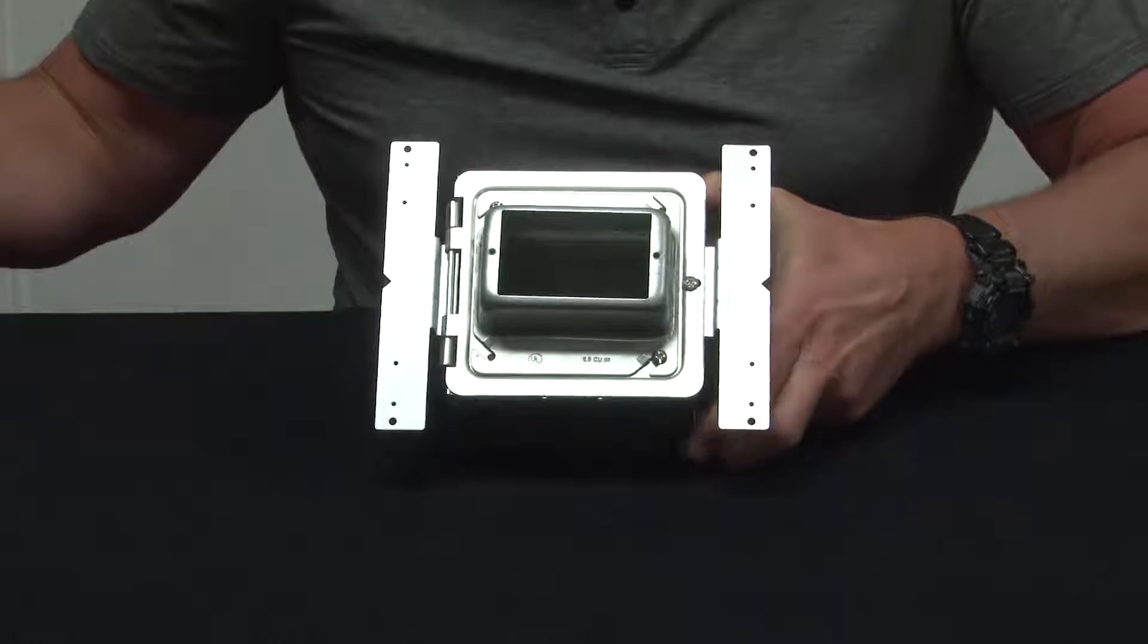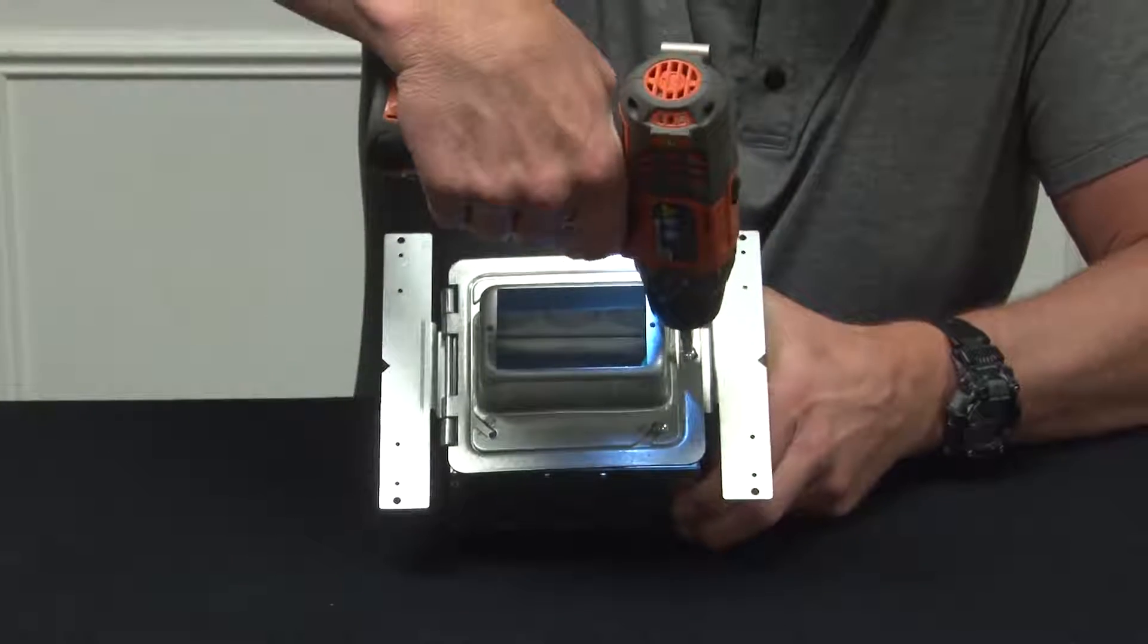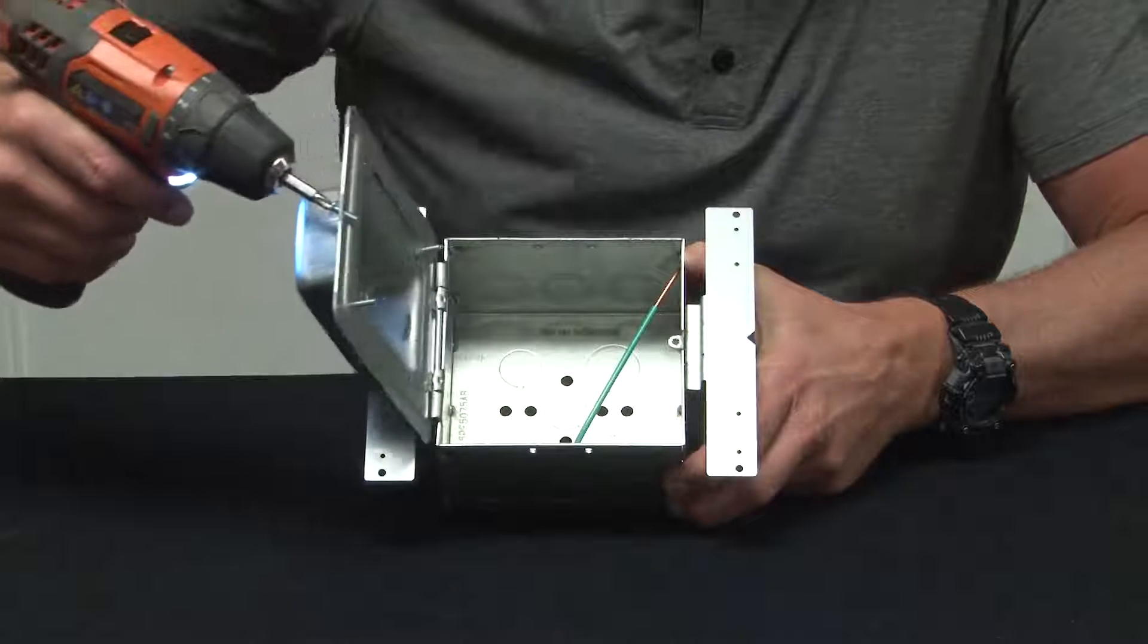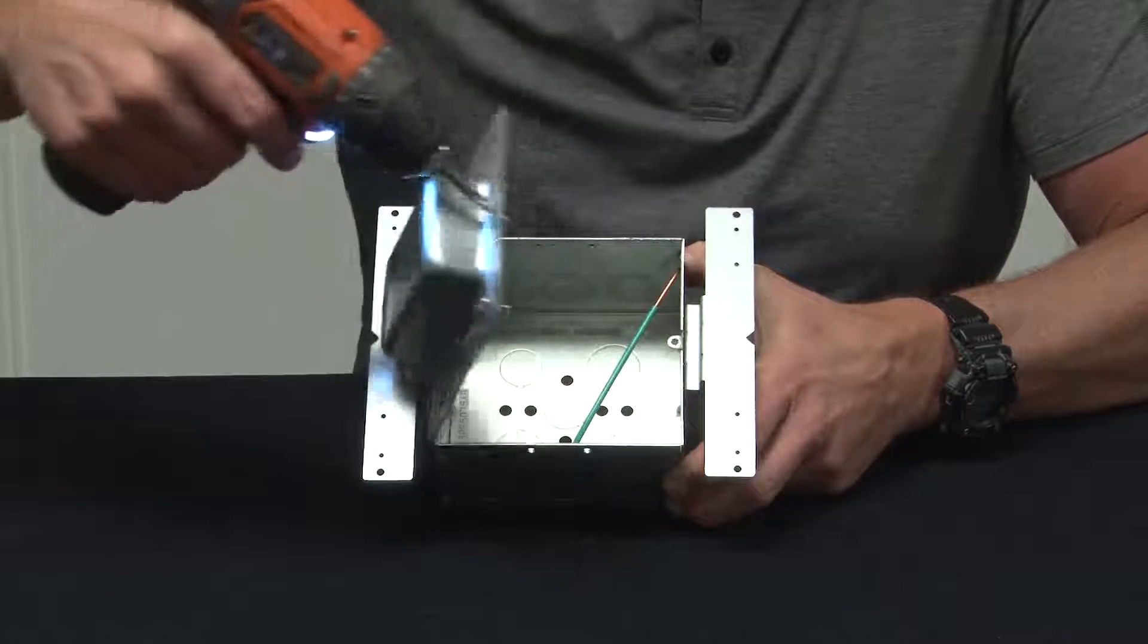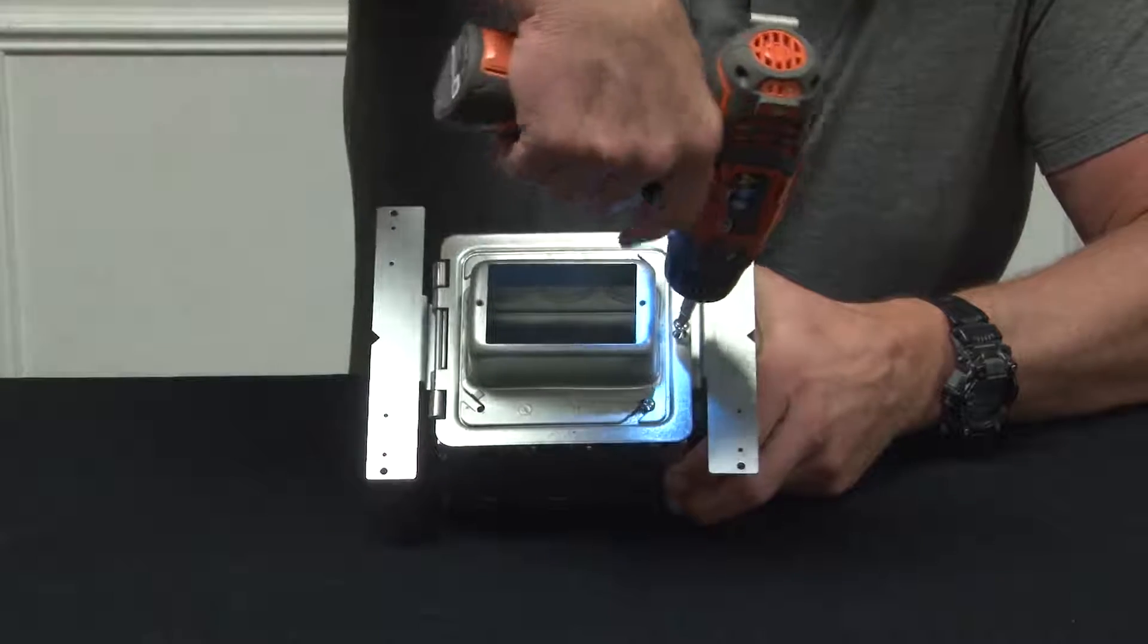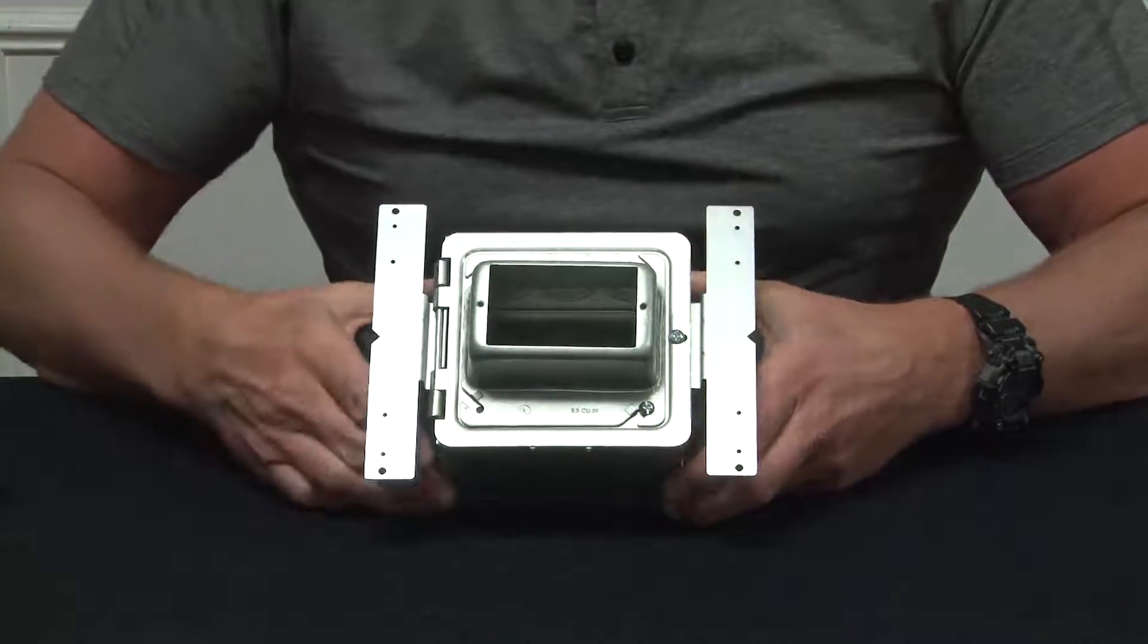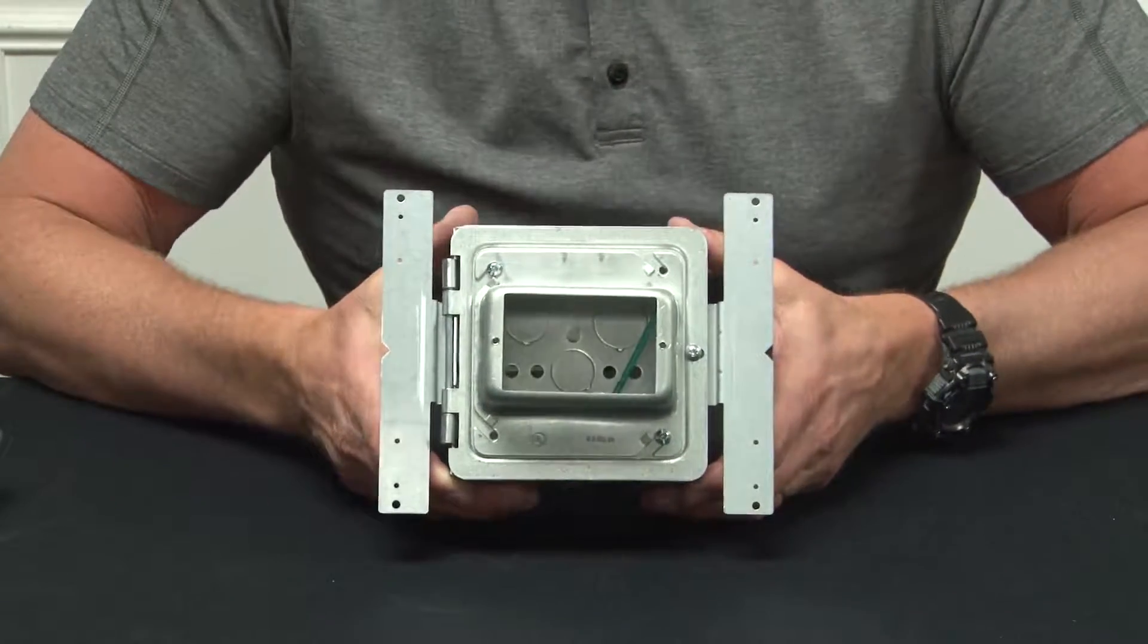What's unique about this box is it allows the installer to prefabricate: open the door, install the device with flying leads, put it back on the box, and close the door. So when you get to the job site, you simply mount it to the stud, open the door, and terminate the device.